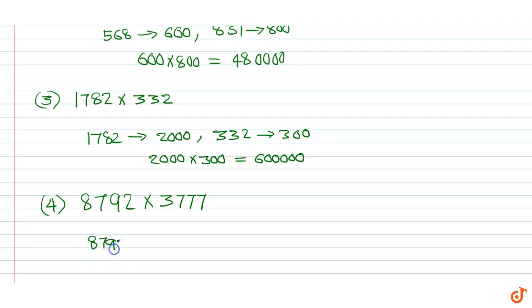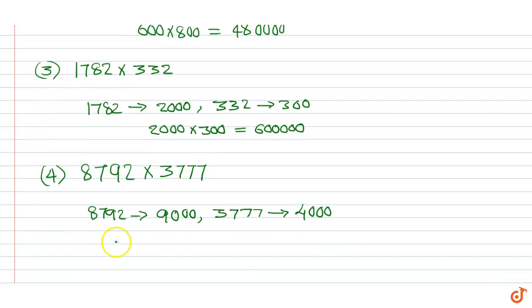8792 x 3777. 8792 can be rounded up to 9000. 3777 can be rounded up to 4000. So the product is 9000 x 4000 which is equal to 36,000,000.